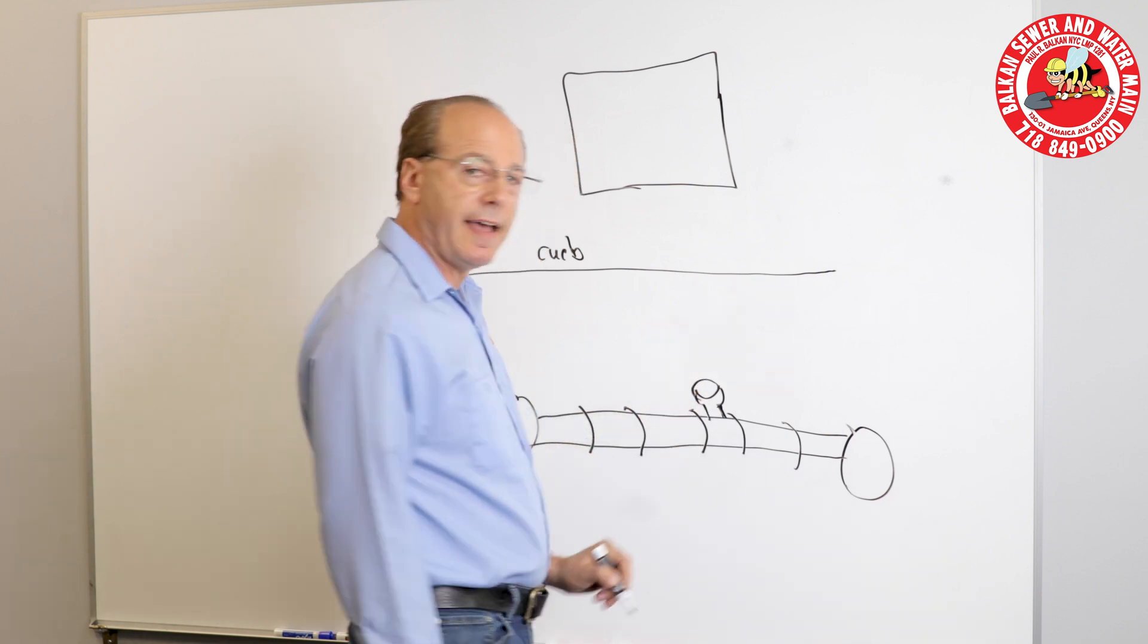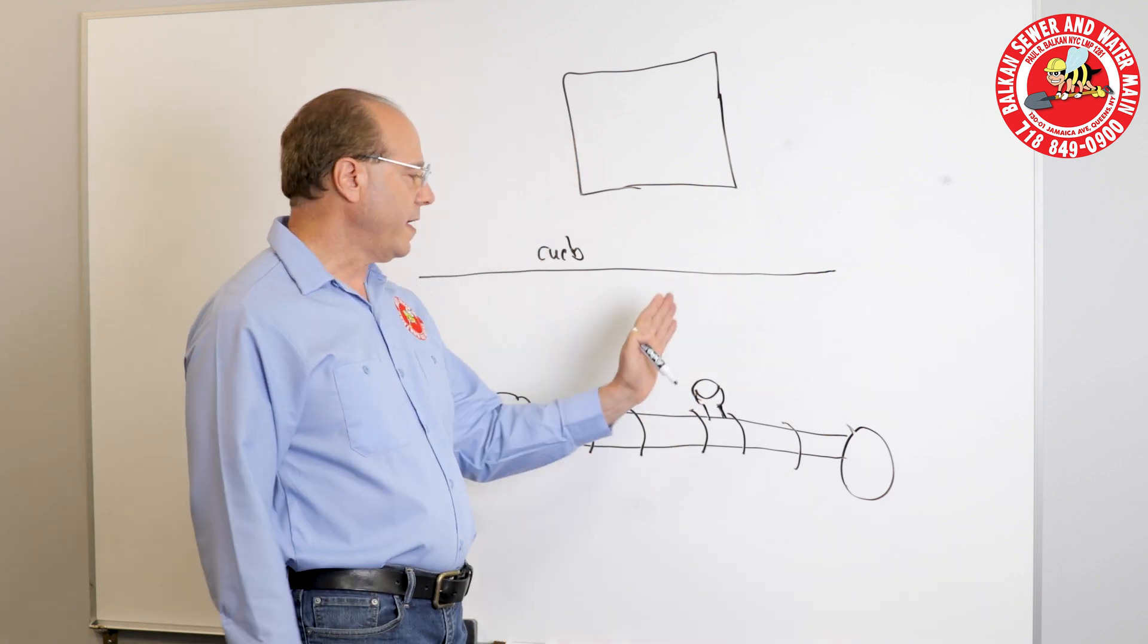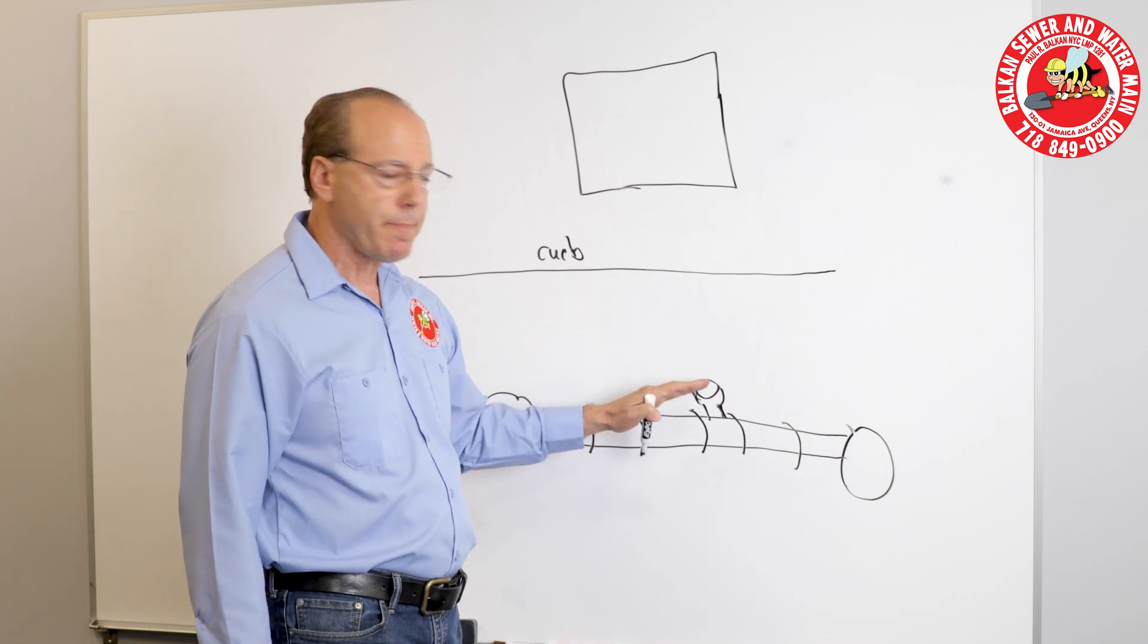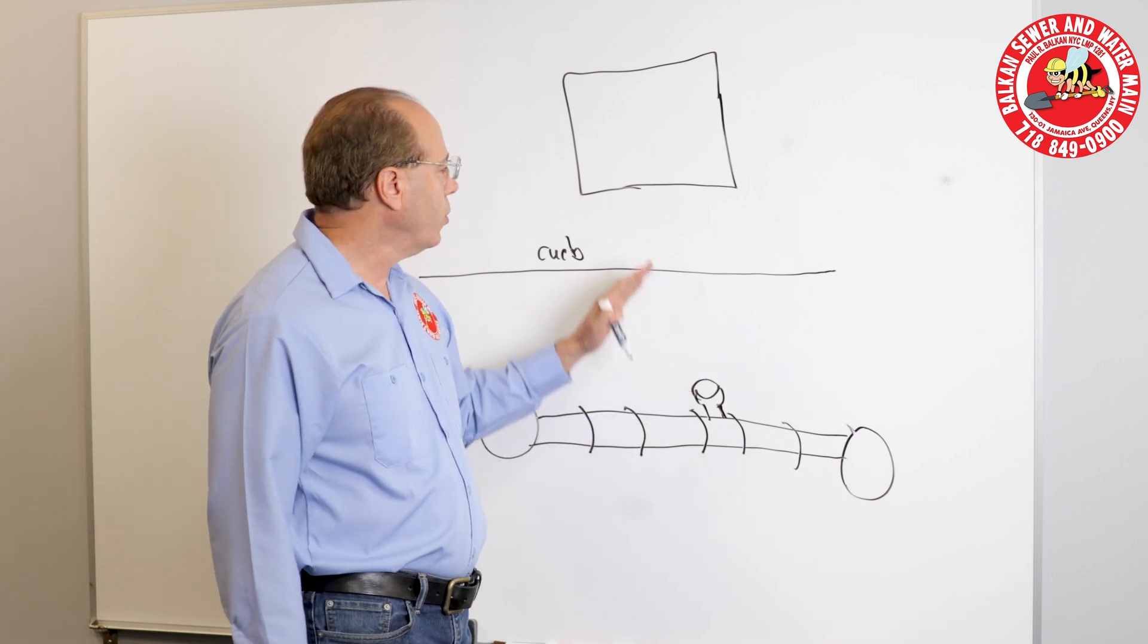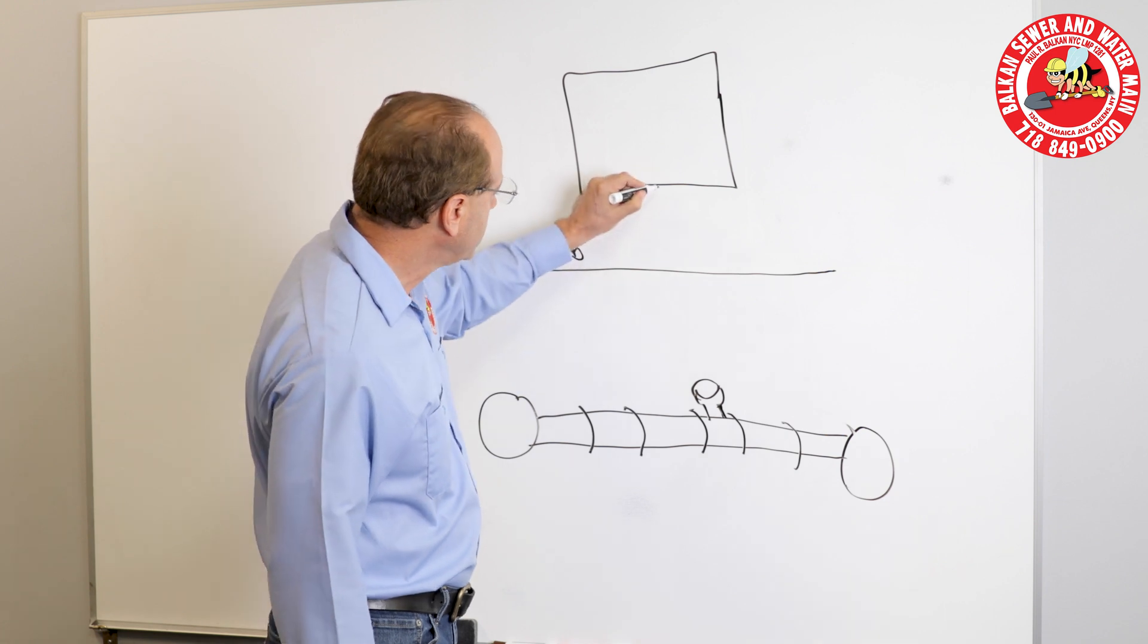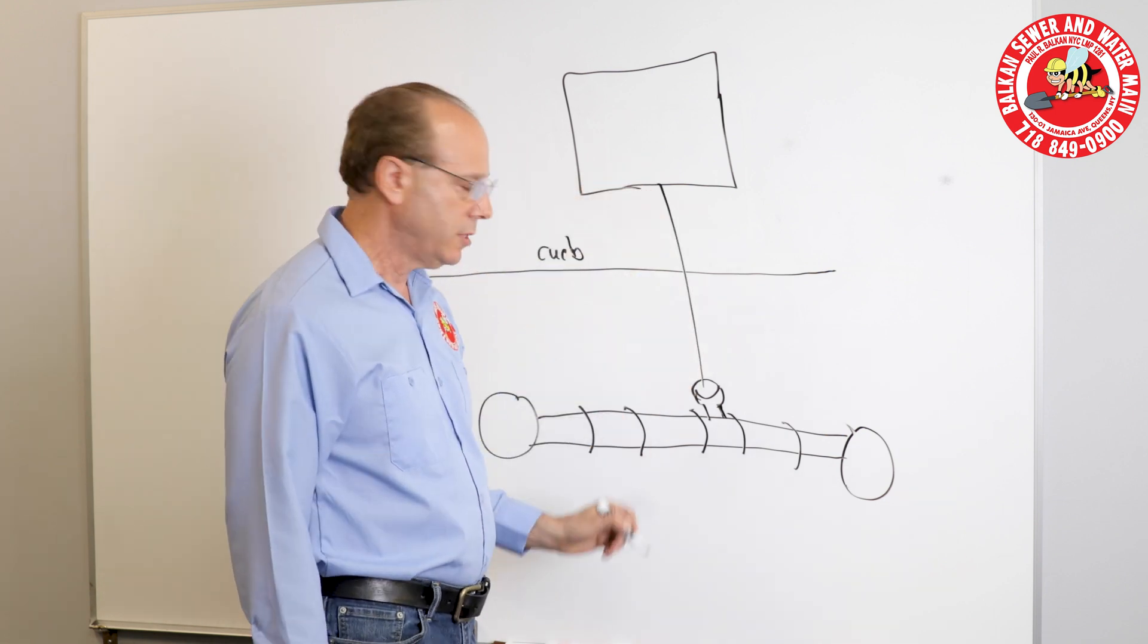and that's left there usually for every buildable lot. There's a cap in it, a plug in it, so when you build your house, you have something to connect your sewer to. That's a spur.